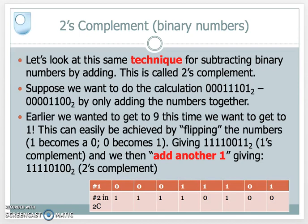Now let's switch number systems and go into binary numbers — but the technique will be exactly the same. When we deal with denary numbers (base 10), we use 10's complement. But now we're in the binary world and we're going to use the 2's complement. So if I want to subtract two binary numbers from each other, I'm going to have to calculate the 2's complement of my second number.